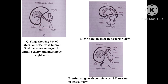Image D shows another 90 degrees of anti-clockwise rotation, displayed in posterior view. The last stage shows the complete 180-degree torsion in lateral view. You can see the mouth location, the anteriorly located shell, the looping of the intestine — the U-shaped intestine — and the position of the pallial cavity and anus. In the adult, the organism has completed 180-degree rotational torsion.